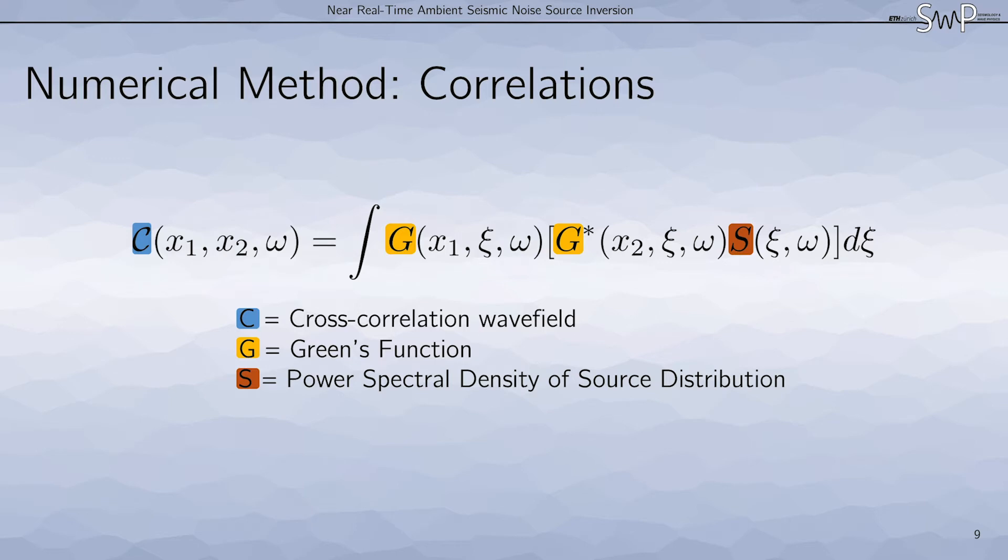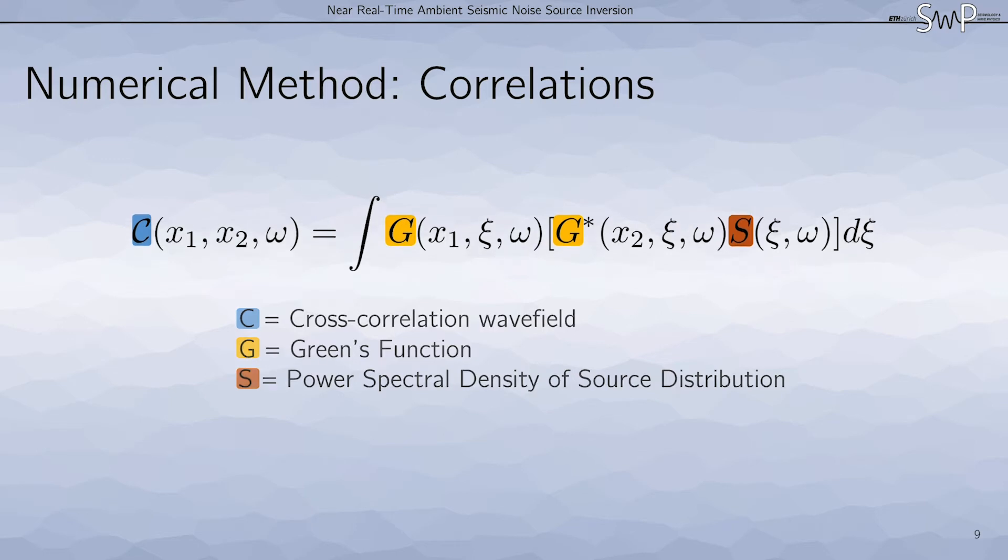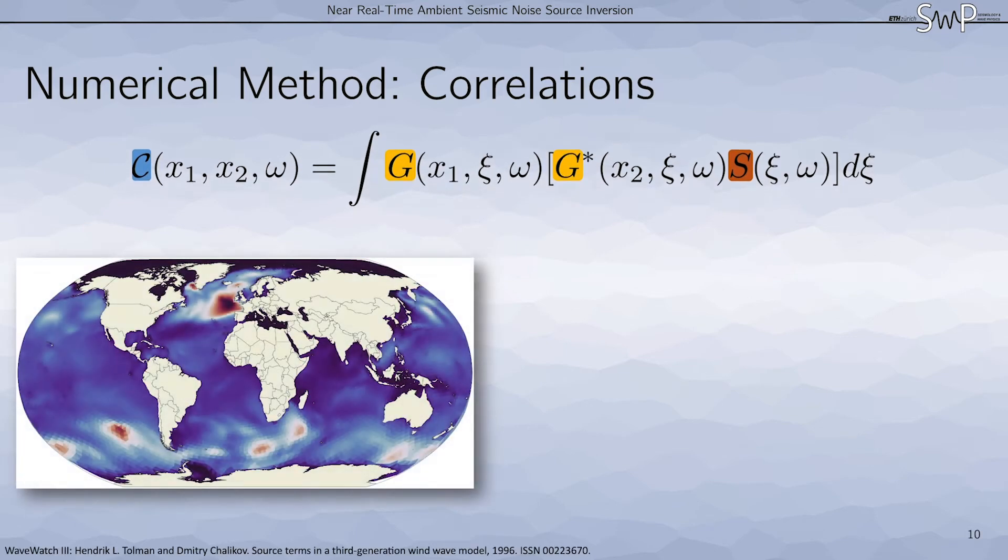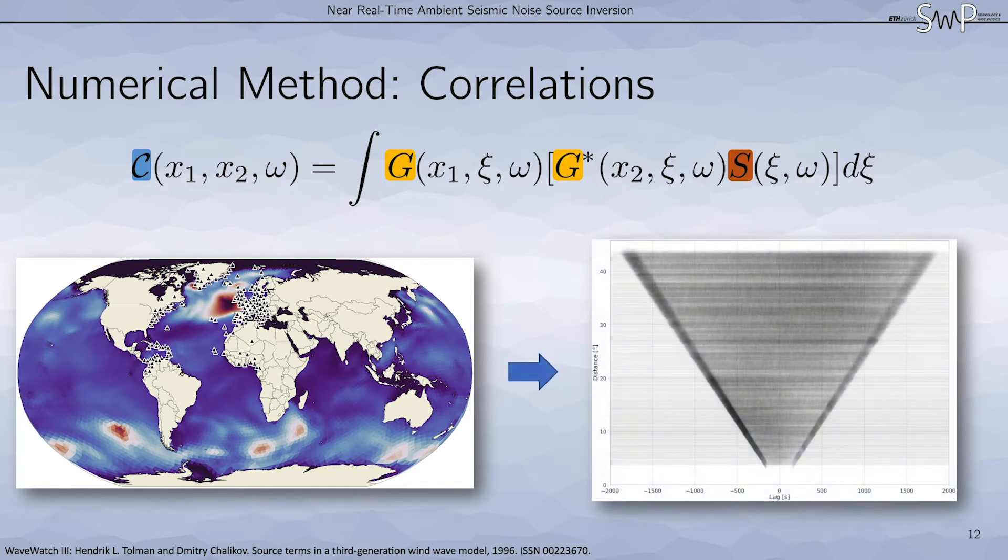This equation allows us to take any source distribution as input to forward model cross-correlations. For example, here we have a significant wave height map from the WaveWatch 3 model, and a few station locations noted by the black triangles. And we use this to then forward model all the cross-correlations for the different station pairs, as we can see here in the section plot.